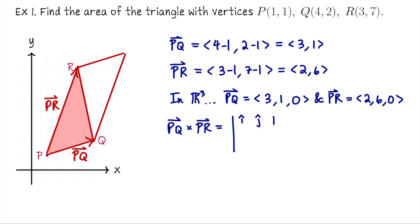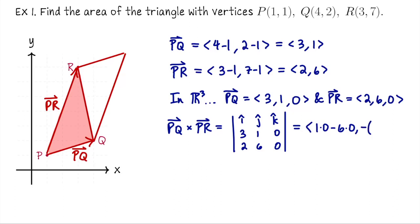Setting up the determinant with i, j, k on the first row, PQ = (3,1,0) on the second row, and PR = (2,6,0) on the third row: the i-component is 1·0 − 6·0 = 0; the j-component is −(3·0 − 2·0) = 0; and the k-component is 3·6 − 2·1 = 16. So the cross product is (0, 0, 16).